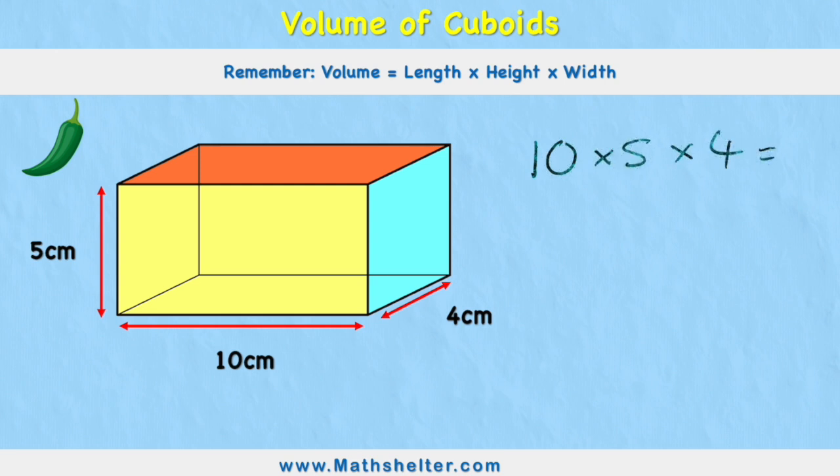And because multiplication is commutative, which means it doesn't matter which way around I do this question, I can answer this in any stage. So I could choose to do 10 times 5, which is 50,